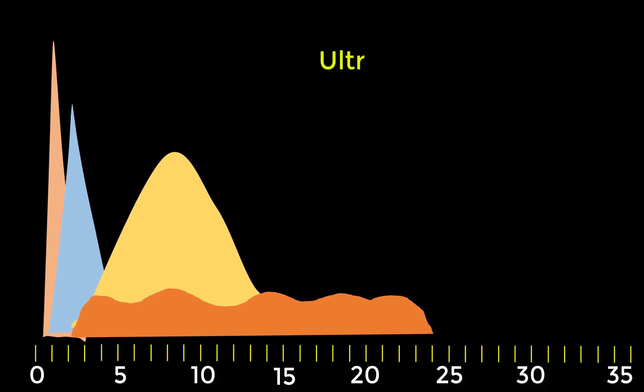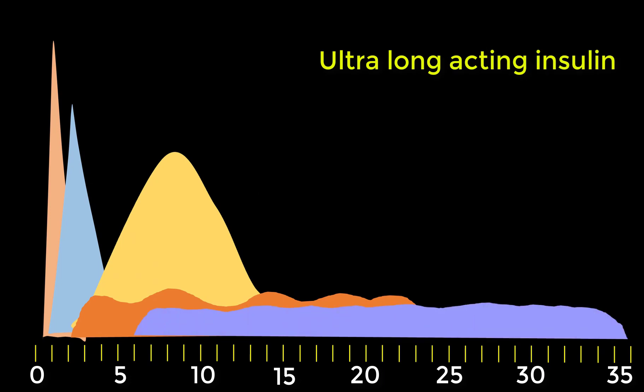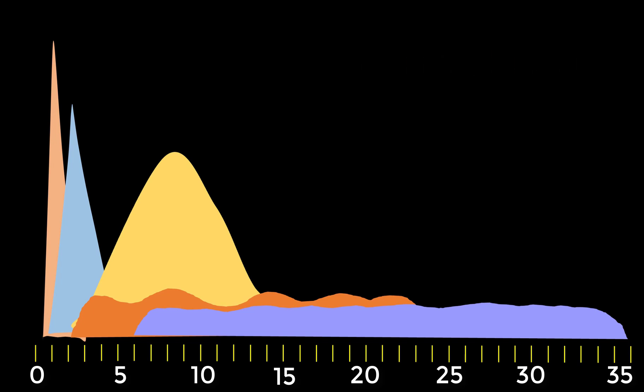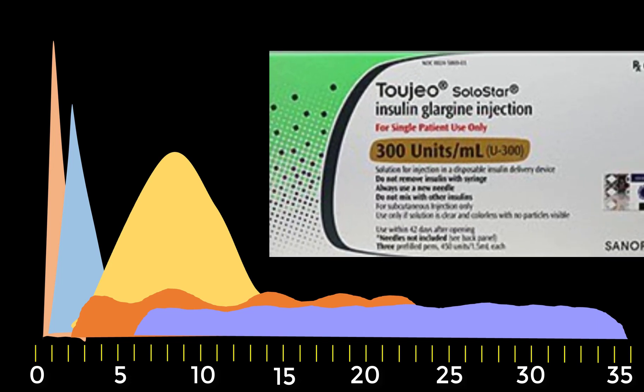Finally, ultra long-acting insulin reaches the bloodstream in about six hours after injection, has no peak, and continues to work for about 36 hours. An example of ultra long-acting insulin is glargine 300, known as Toujeo.